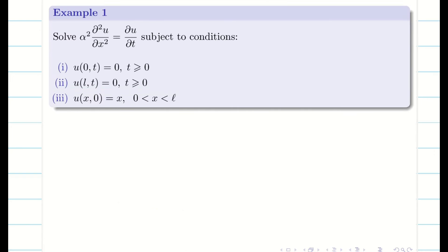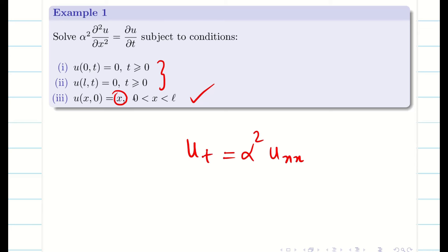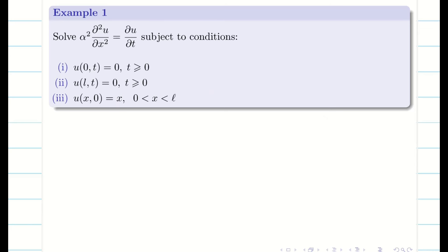This problem is very common. They have given the heat equation: u_t is equal to alpha squared u_xx, and two boundary conditions and one initial condition are given. The same problem can be asked theoretically: a rod of length l centimeter with insulated sides is initially at a uniform temperature x. Its ends are suddenly cooled to zero degrees Celsius and kept at that temperature. Find the temperature function u(x, t). Whether it is given directly or theoretically, we can solve the problem.